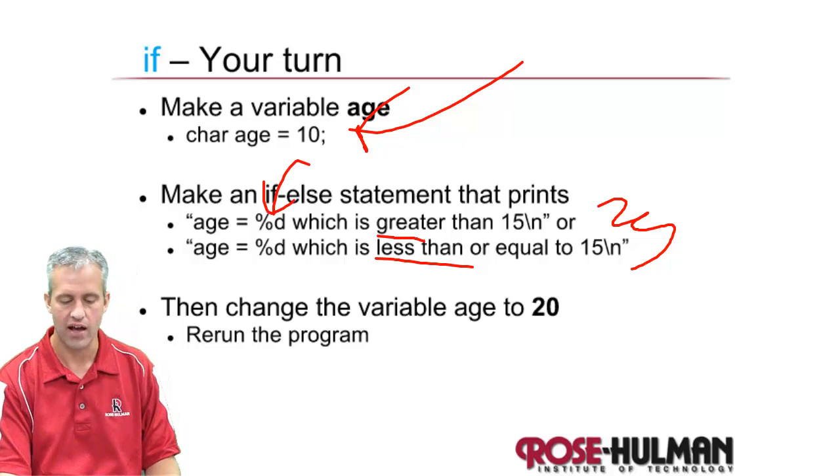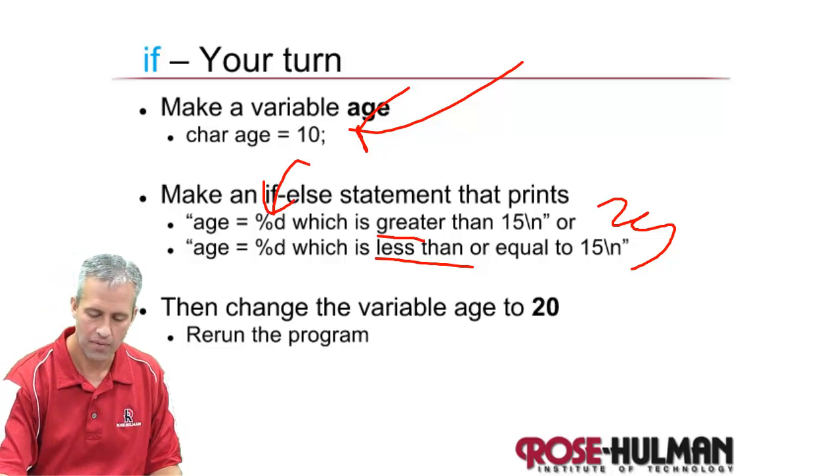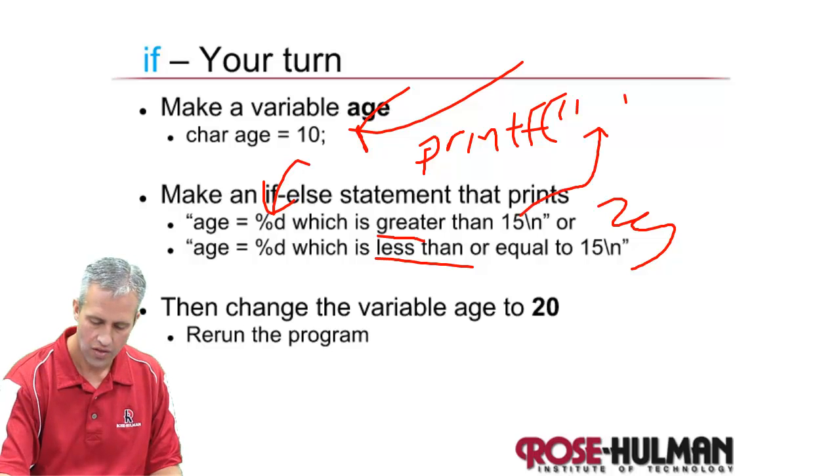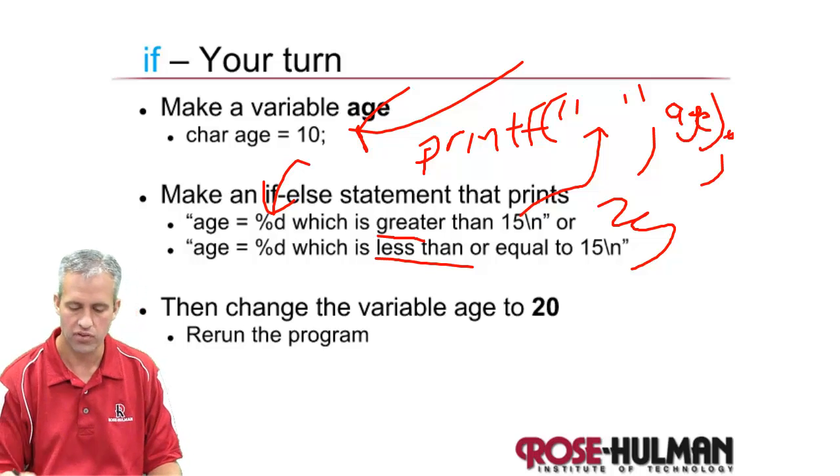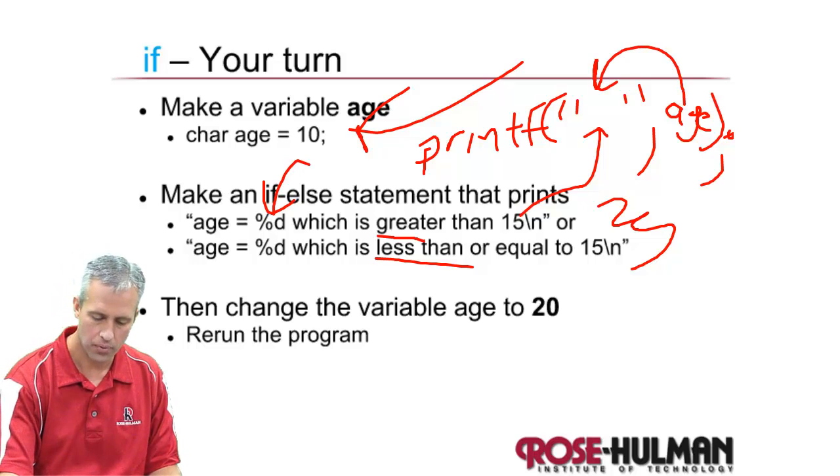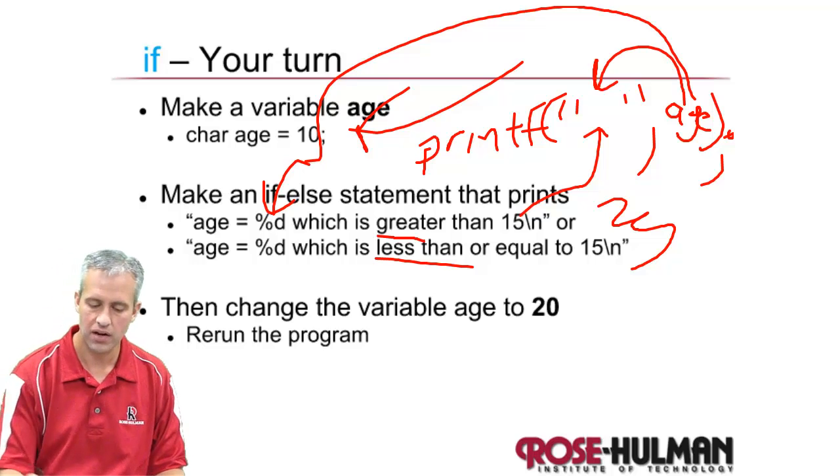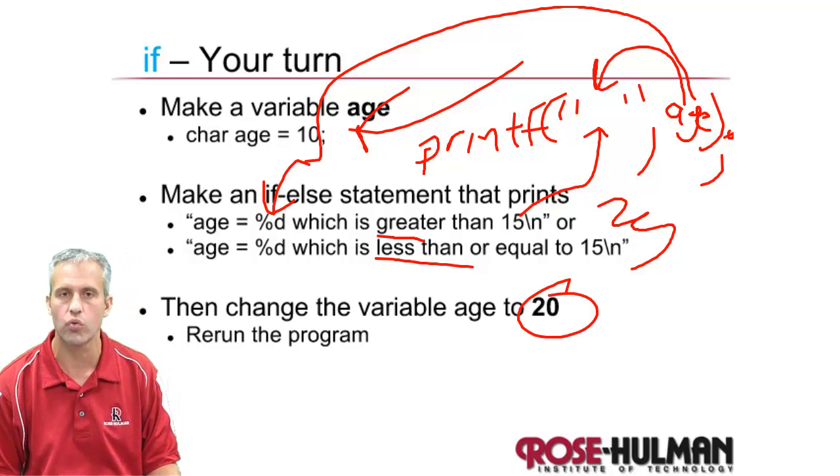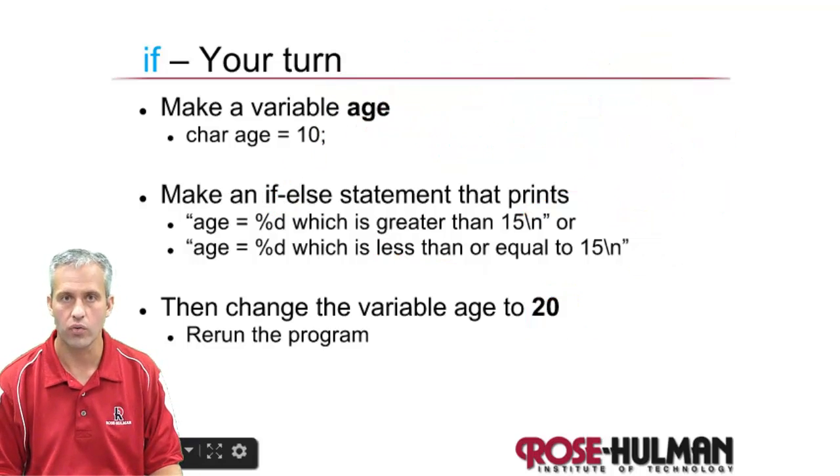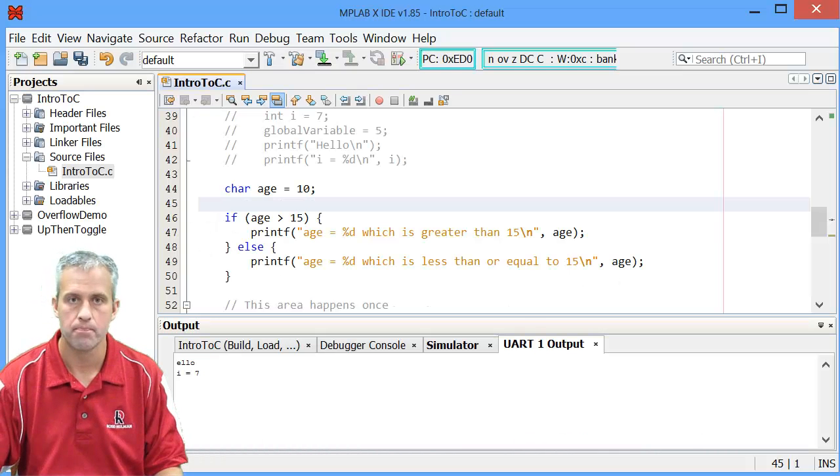And then you'll have this thing here. And then you'll have a comma, and then you'll say age, and then you'll have a semicolon. So that's what it looks like. And then whatever age is, we get put in to the %d. So take a minute if you can do that. After you run it with 10, try it again with 20, make sure it all works. All right. I'll go ahead and work it as well.